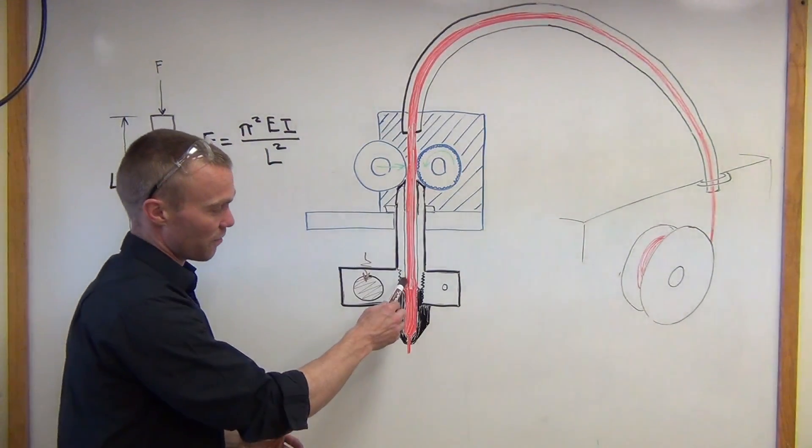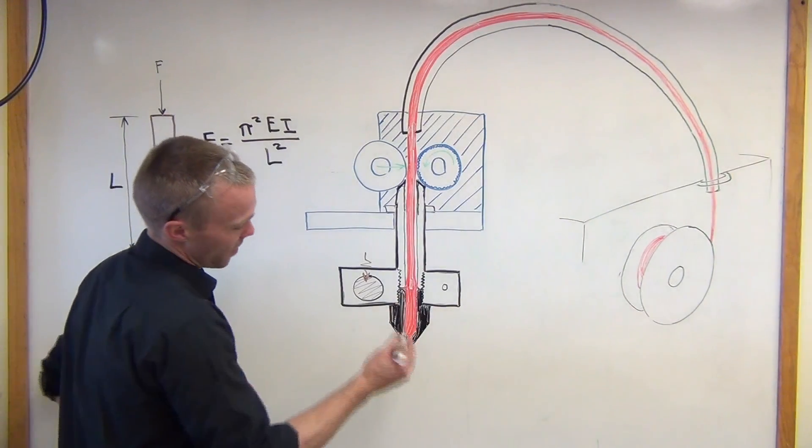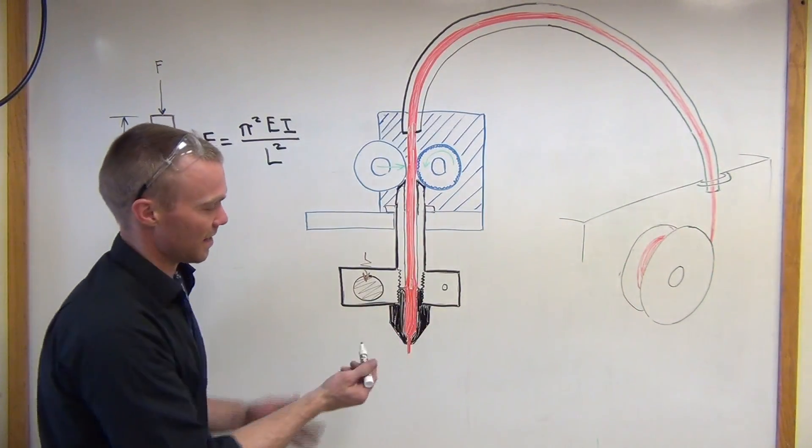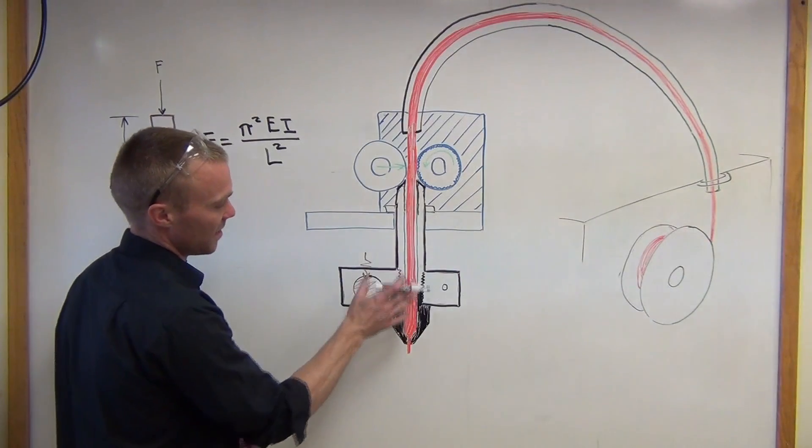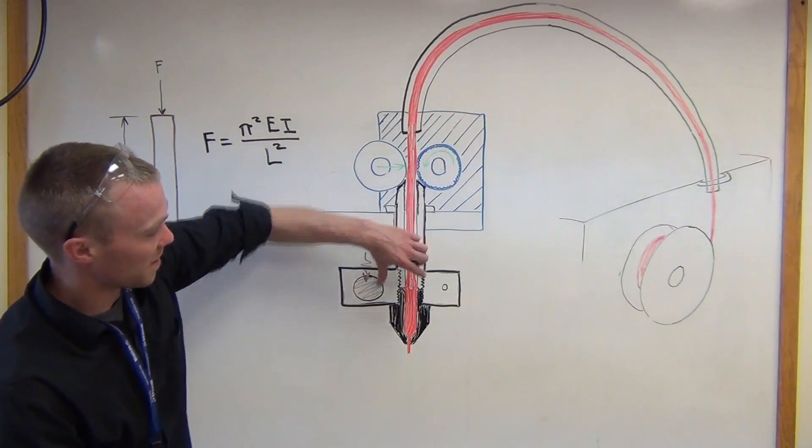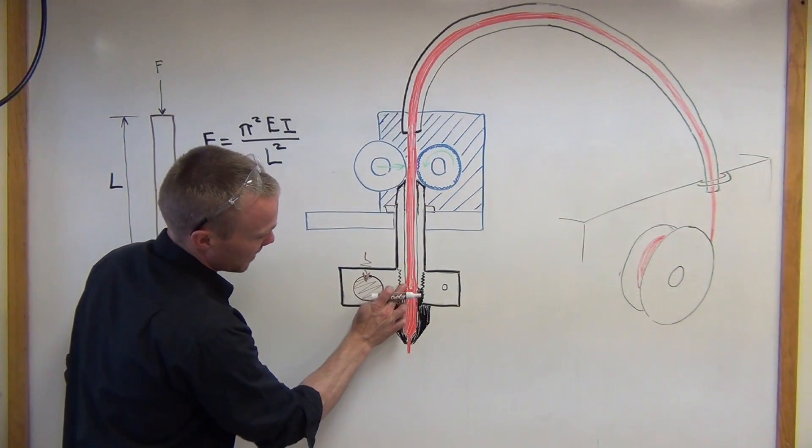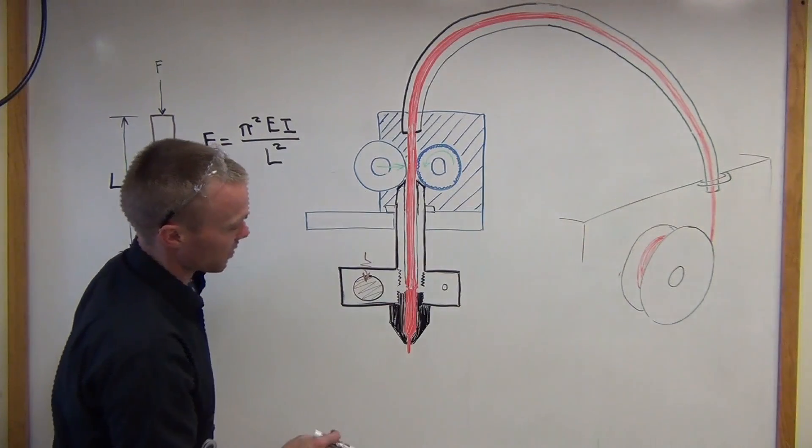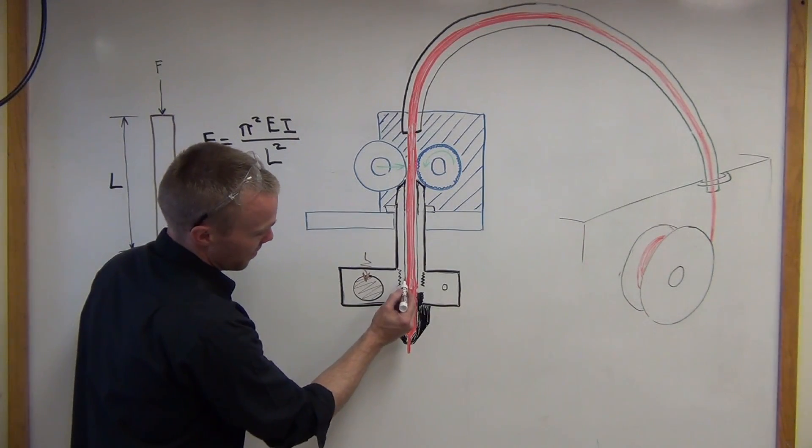Some extruders can have voids here where the nozzle is engaged. Say the nozzle screws in and then the heater screws onto the barrel like this. If there's a gap between those two parts, the melted material will create a bulb there and fill that region.